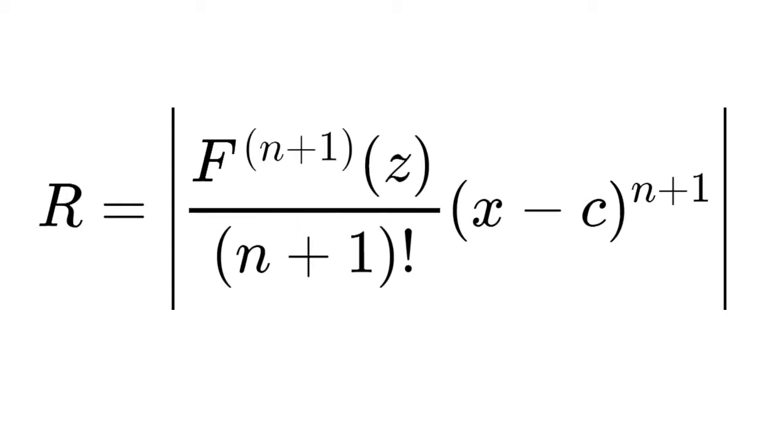And now we're going to take a look at the equation for the Lagrange form of the remainder. This is the equation: the remainder is equal to f to the (n+1) derivative plugging in z, over (n+1) factorial, times (x-c) to the (n+1) power, and all that is within an absolute value.